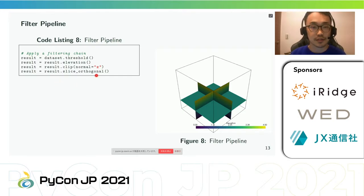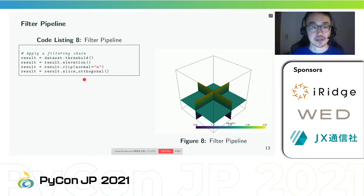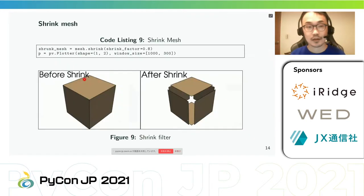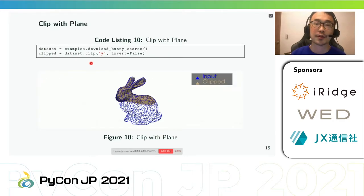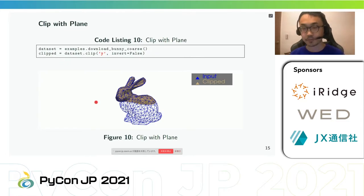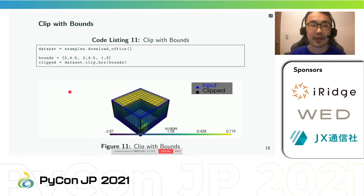Using slice_along_axis and other filter combinations, we can create a full rendering scene. There is also a filter useful for mesh viewing: code listing 9 shrinks the individual faces of a mesh using the shrink method. We can also clip any data set by a user-defined plane using pyvista's DataSetFilters.clip, or clip by XYZ bounds using DataSetFilters.clip_box.